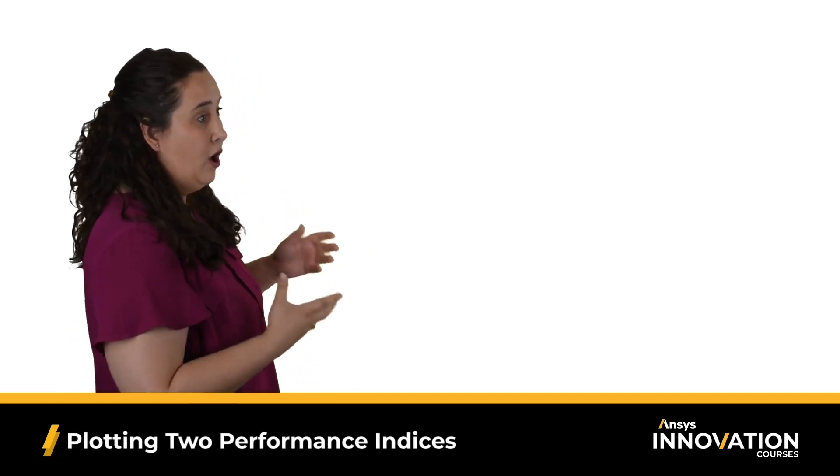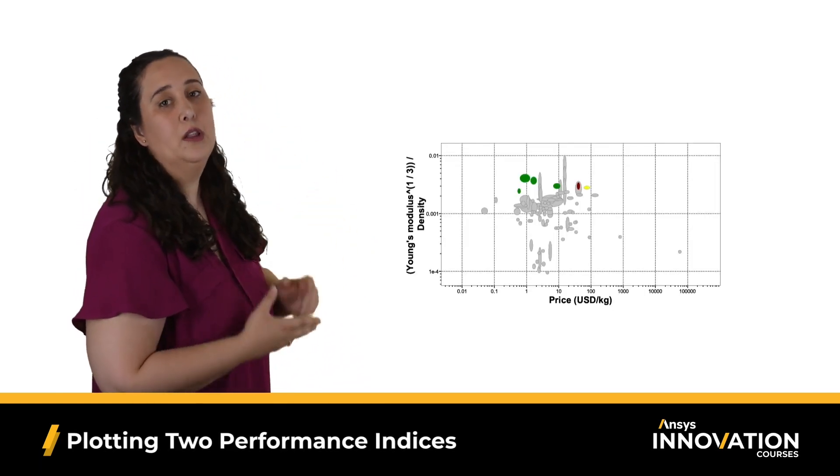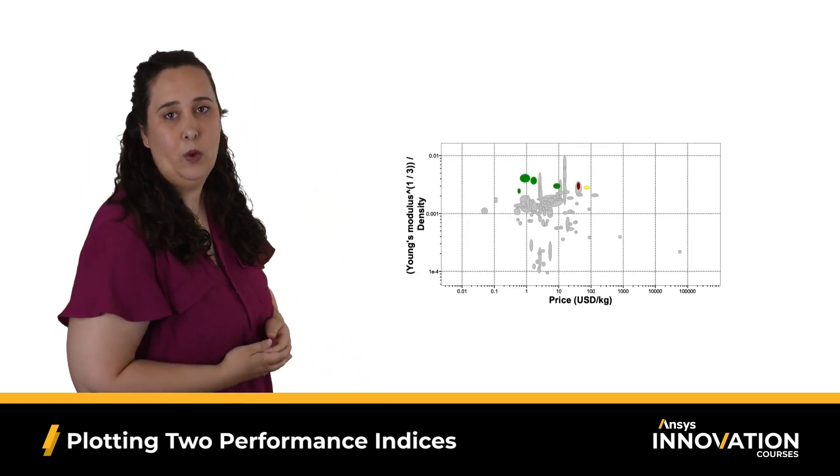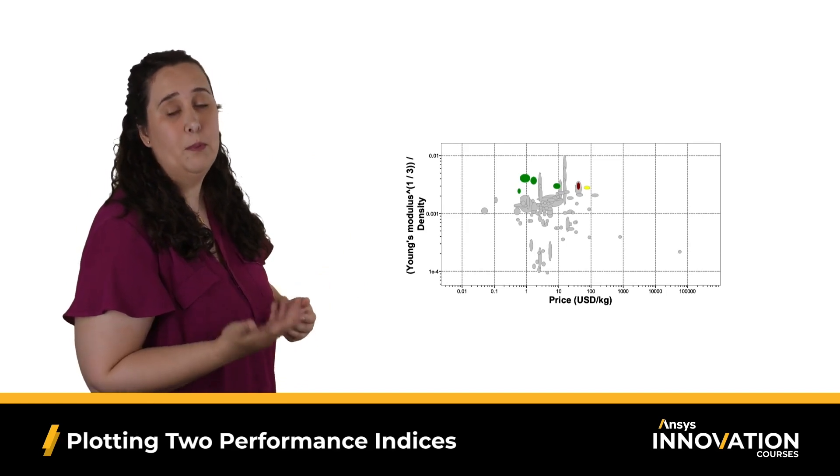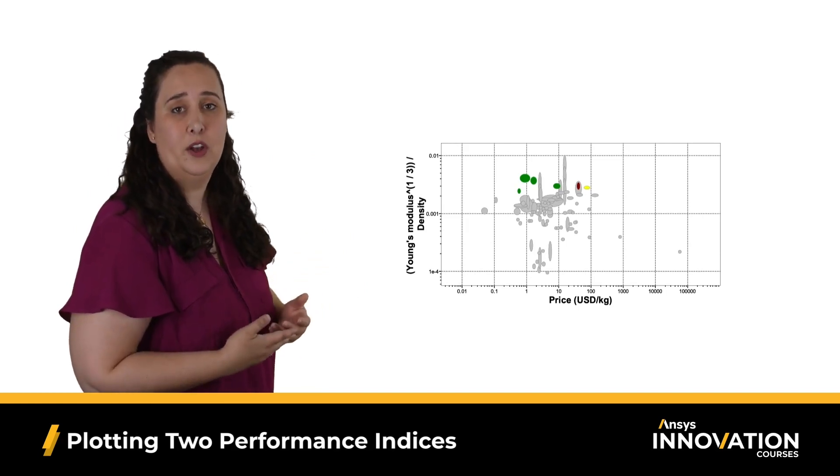Welcome to the second lesson in our course on advanced material selection. Today we'll be discussing how we set up our selection chart to compare two objectives with one another, and some different strategies for assessing trade-offs during design. We left off looking at this chart for our longboard example, trying to optimize both mass and cost performance.